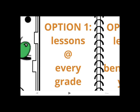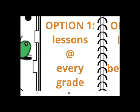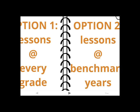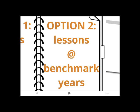The first is to teach one or two lessons per grade level so that each student learns some aspect of digital literacy and citizenship every year. The second is to choose benchmark years in elementary, middle, and high school so that students receive all of the lessons recommended for those grades and learn about all of the topics required by CIPA. Use our Implementation Guide to decide between these two options.